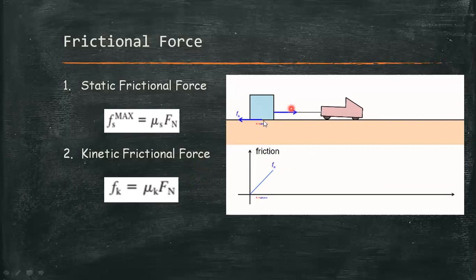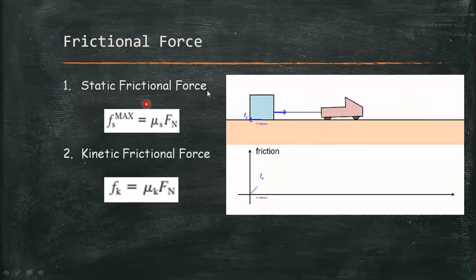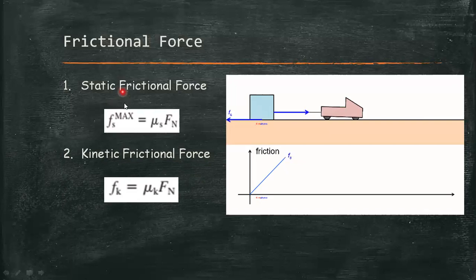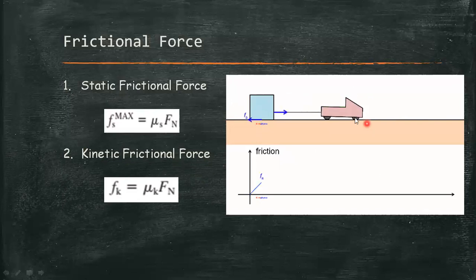As seen in the graph, as the applied force increases to the point where the box begins to move, the kinetic friction Fk becomes much less than the maximum static frictional force. This makes it slightly easier to keep the box moving than to start it moving. The kinetic frictional force remains constant as long as the applied force is constant.